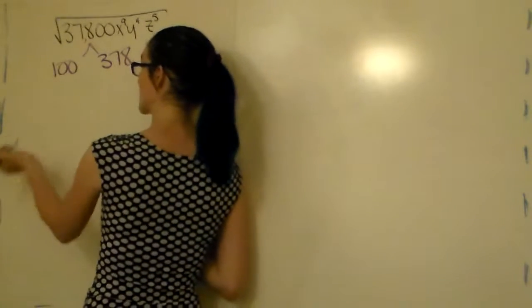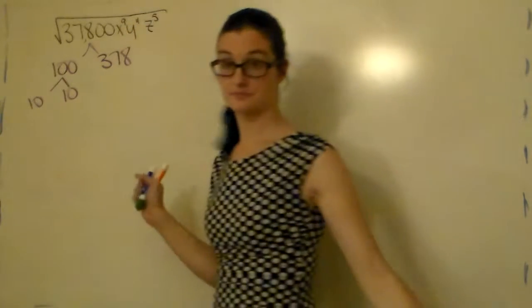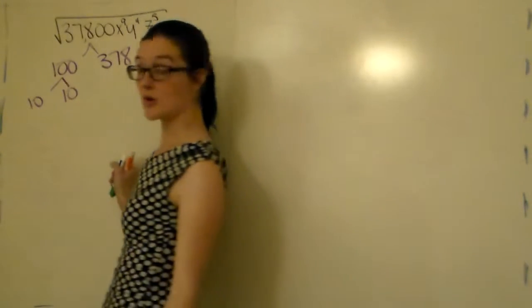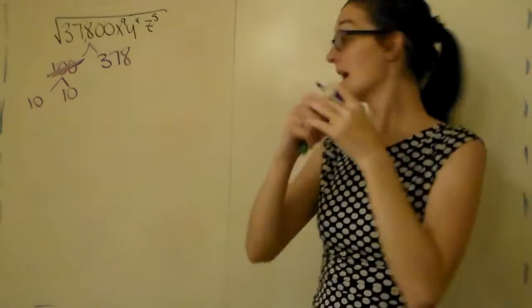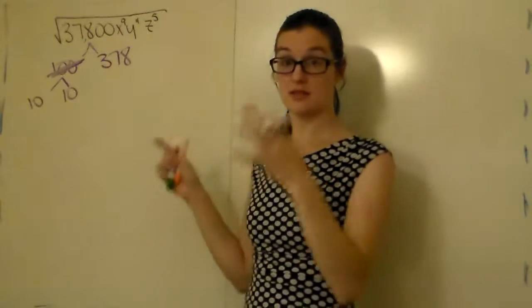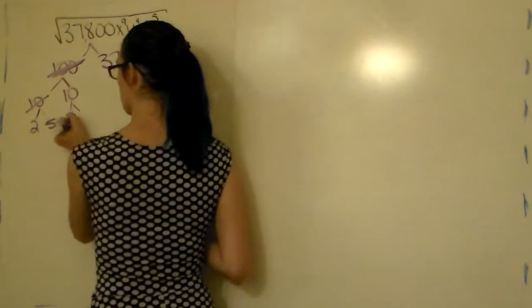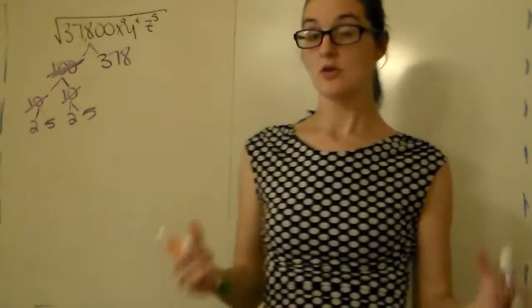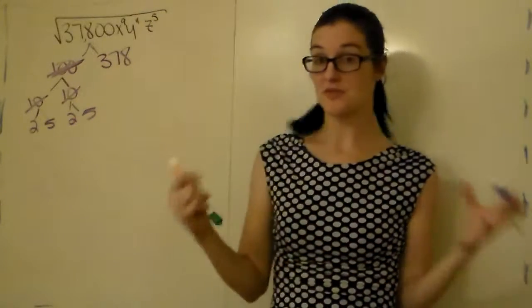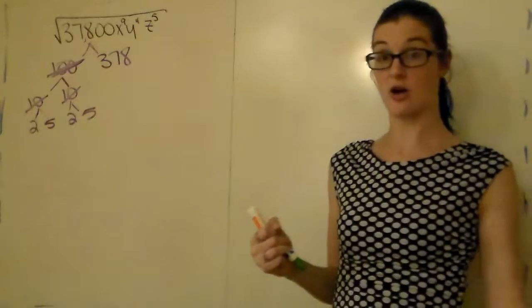100 is the same thing as 10 times 10. Once you break a number up, I go ahead and cross it out so I don't accidentally use it again. 10 can be broken up more — 10 is 2 times 5. Same for the other 10: 2 and 5. Two cannot be broken up any farther, since the only things that go into it are 1 and itself. Make sure you go all the way to prime numbers.